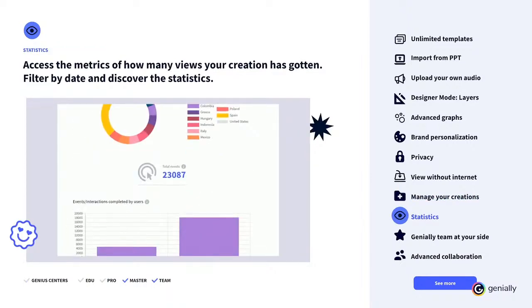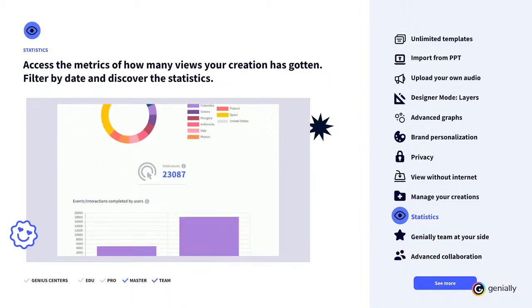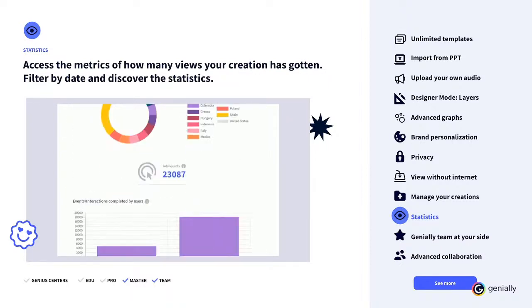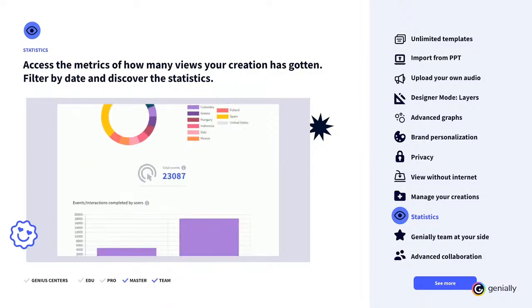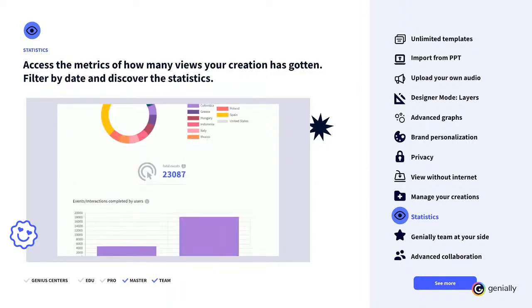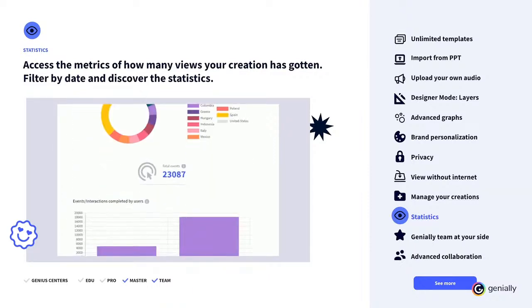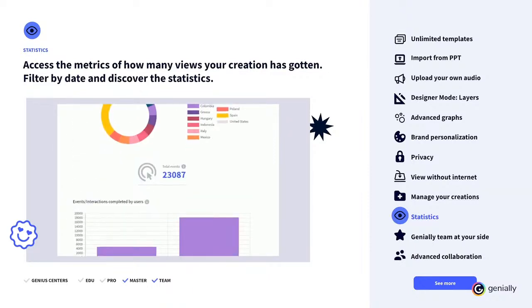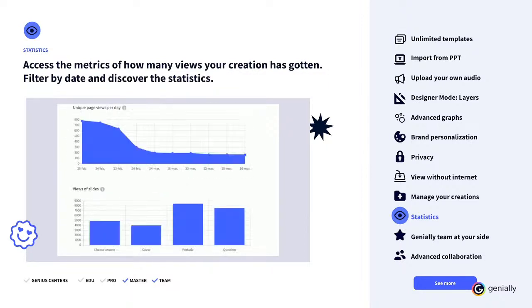Statistics. Do you want to know how your content is being consumed? How your audience interacts with it? Access the metrics of how many views your creation has gotten. Filter by date and discover the statistics. If you want even more details, you can link your Google Analytics ID. If you know how your Geniallys work, you can improve them even further.